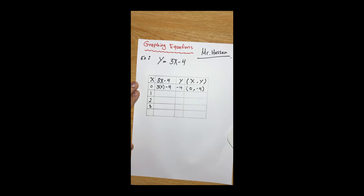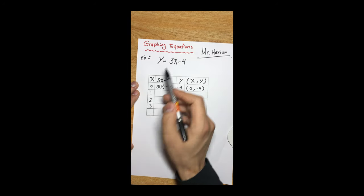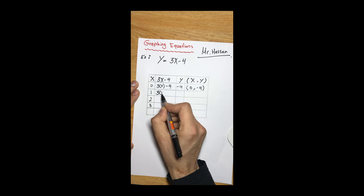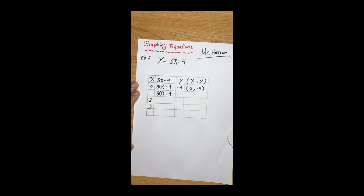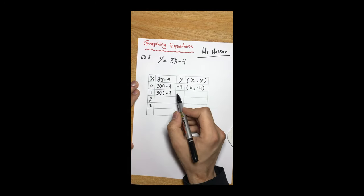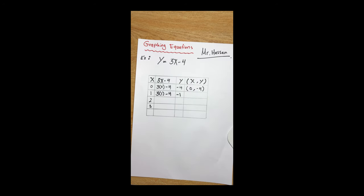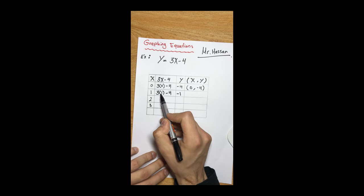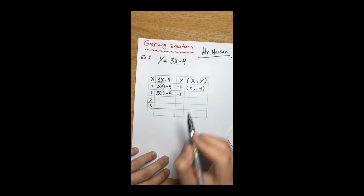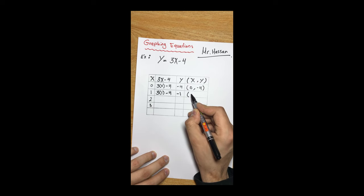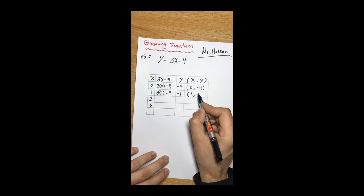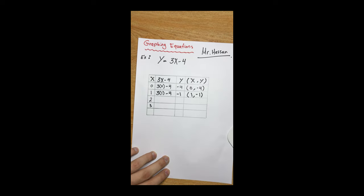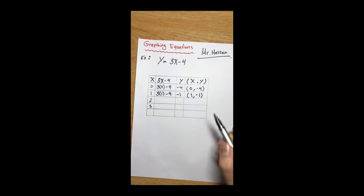Now we input one instead of x: 3 times 1 minus 4 — three times one is three, and three minus four gives us negative one. So if x is equal to one, then y is negative one. This is our second ordered pair.